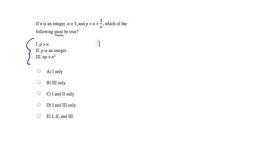Now, in the case of Roman numeral 1, it's asserting that P is greater than N. So we're going to focus on this equation right here, and it says that P is equal to N plus 3 over N.